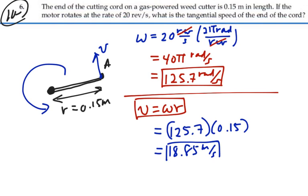Oftentimes radians is regarded as, in a sense, a unitless quantity. So we don't say meters radians per second. We just kind of drop the radians and say 18.85 meters per second. That's the velocity of the point on the very end of the cord.